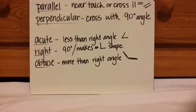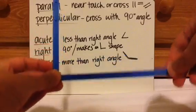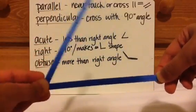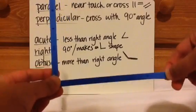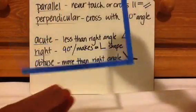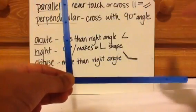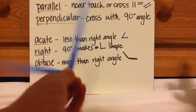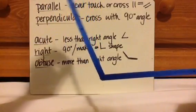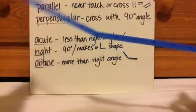We have acute angles, which are less than a 90-degree angle — less than a right angle. So if this is a right angle, then anything smaller than that is in the acute range. Then we have the right angle, which is exactly 90 degrees. It can face different directions but it still makes an L shape or a backwards L. Then we have obtuse, which is more than a right angle — all the angle range beyond 90 degrees.